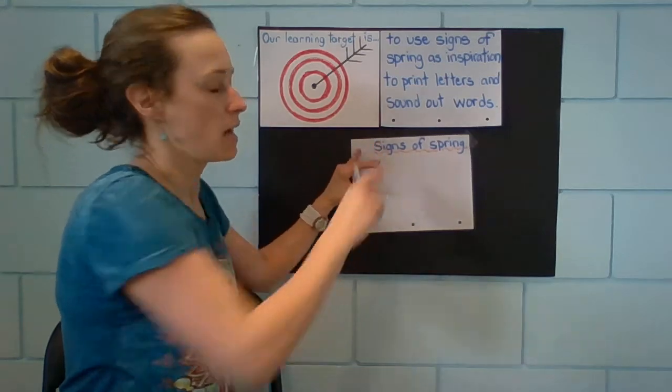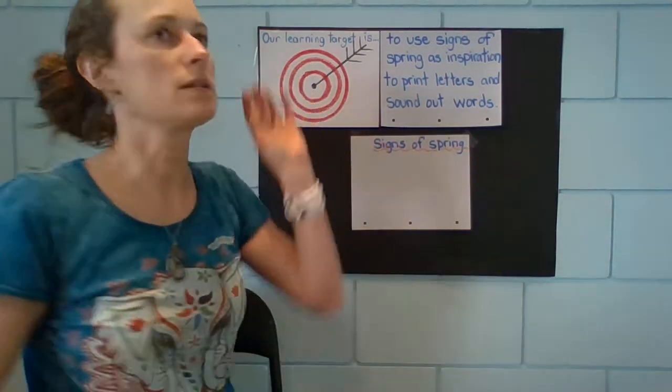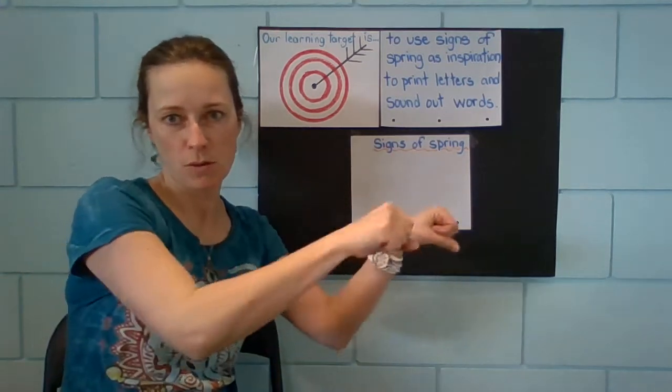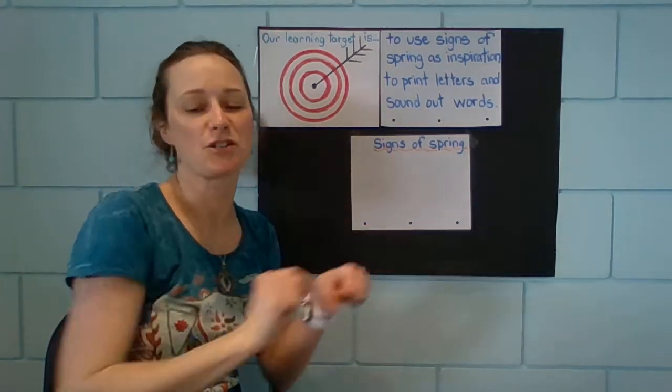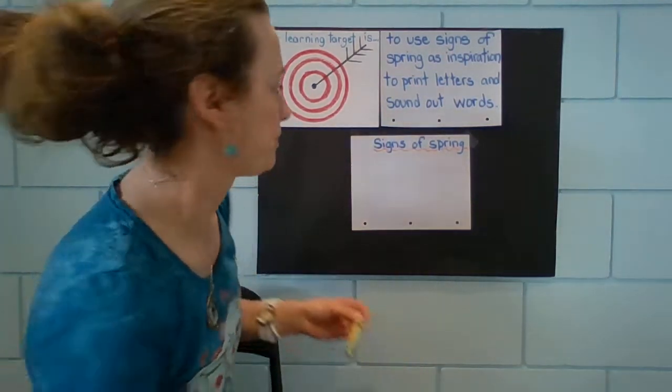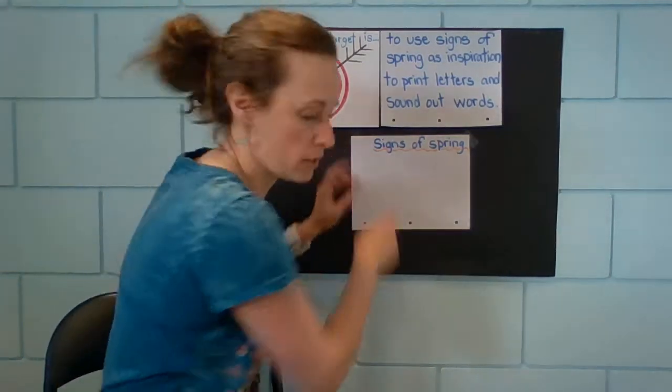So how about we start with what is the green stuff on the ground that grows that we like to mow? That's right, grass. Okay, so grass is a sign of spring. So we'll start with that. Can you see that? Not at all. All right.